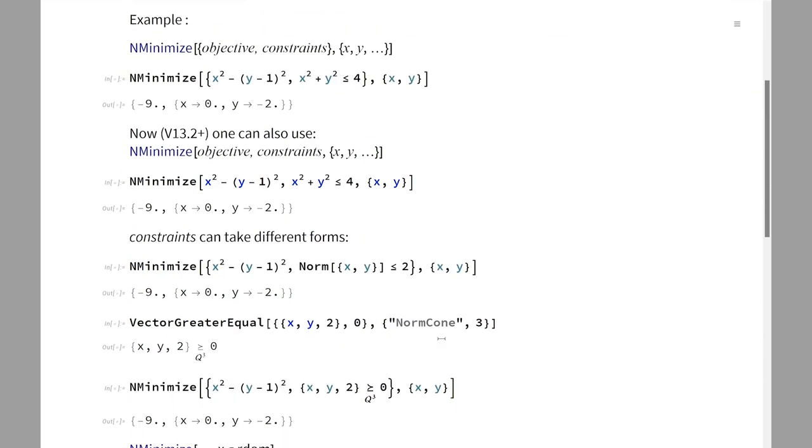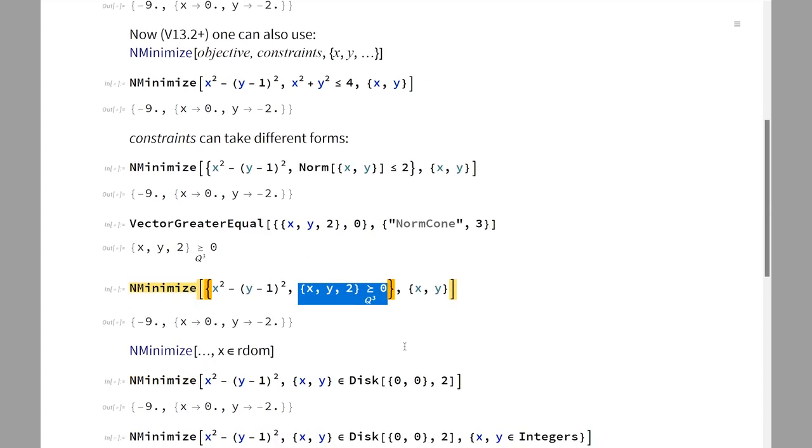We can give constraints in many different forms. For example, this non-linear constraint can also be given as a convex constraint right here—this is a norm constraint that can be represented with this vector inequality. These are all new notations coming from the optimization functionality.